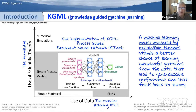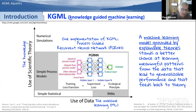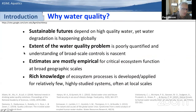By combining knowledge and machine learning we can do better than either one alone in terms of model performance. The predictions are better, predictions outside of sample are better, and we can conform to physical laws and ecological principles that we think are important. From an ecologist's perspective it's really important to feed back to our knowledge of the system — we've also learned that we can learn things about our model and therefore about the underlying theory that goes into those models.